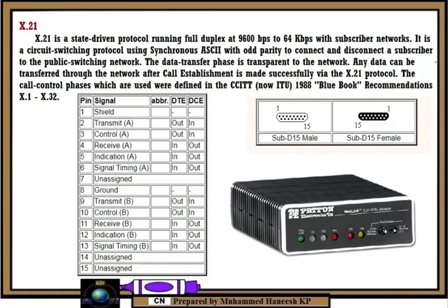X.21 normally is found on a 15-pin D sub-connector and is capable of rendering full duplex data transmissions. The call control phases were defined by the CCITT, now ITU, in 1988 Blue Book recommendations X.21 and X.32. The signal element timing or clock is provided by the carrier and is responsible for correct clocking of the data. X.21 is primarily used in Europe and Japan, for example in the Scandinavian Datex and German Datex-L circuit switched networks during the 1980s.